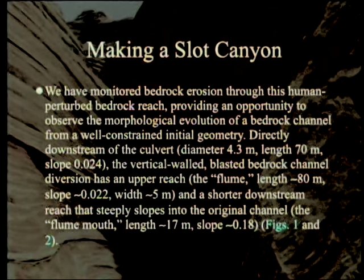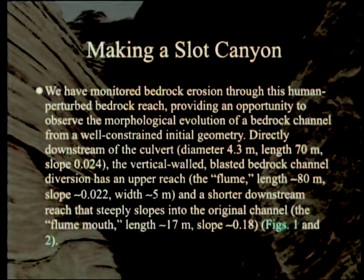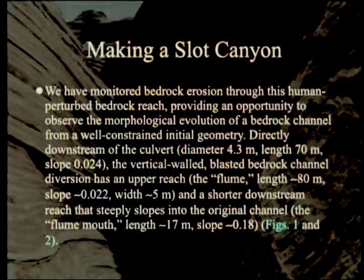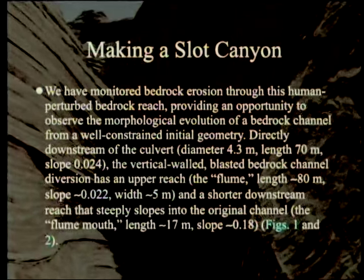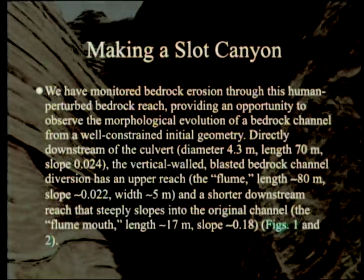They monitored bedrock erosion through this human-perturbed bedrock reach, providing an opportunity to observe the morphological evolution of a bedrock channel from a well-constrained initial geometry. Directly downstream of the culvert — diameter 4.3 meters, about 14 feet, that's a big culvert — length 70 meters, slope 2.4%. The vertical-walled blasted bedrock channel diversion has an upper reach called the flume, about 80 meters long, slope 0.2%, width about 5 meters.